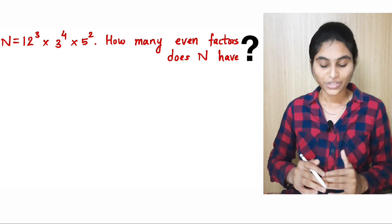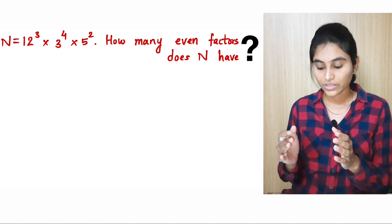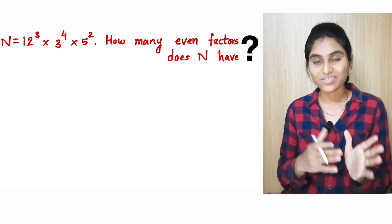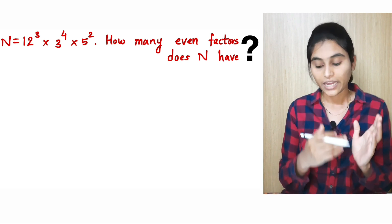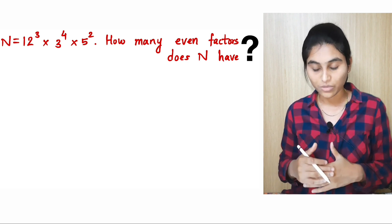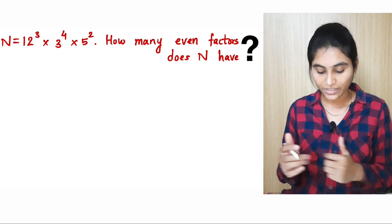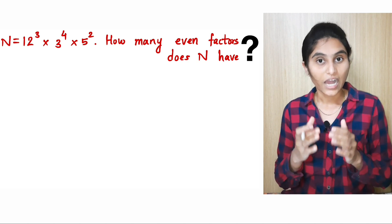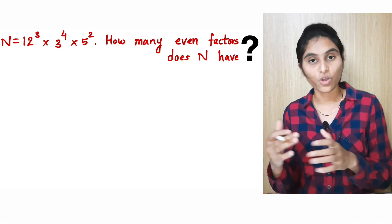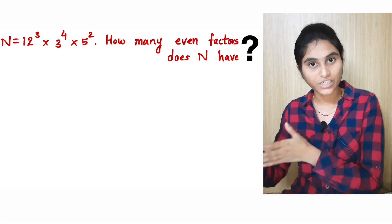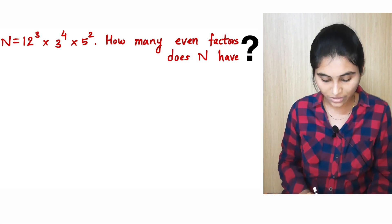How to solve this question? Factors means we have some even factors and some odd factors, and we have been specifically asked about even factors. For that, let us first find out how many factors n has in total, and then from them we will count the even number of factors. So let us start.